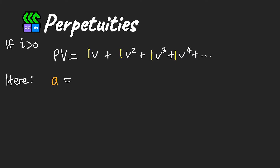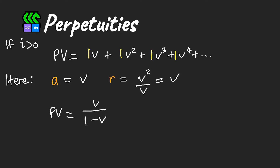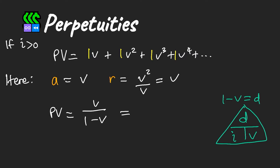Making use of the geometric series formula, with 'a' equal to v and 'r' equal to v, we get the present value of v divided by 1 minus v. Using our triangle, we can rewrite 1 minus v as iv, and the v terms cancel, leaving us with the present value equal to 1 divided by i, where i is assumed to be greater than zero.